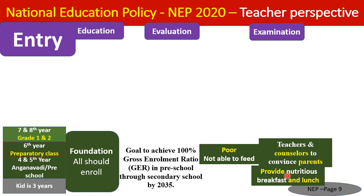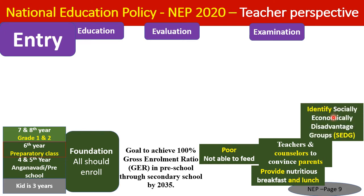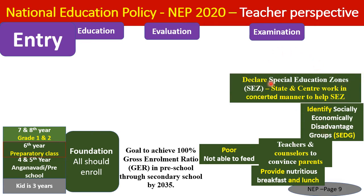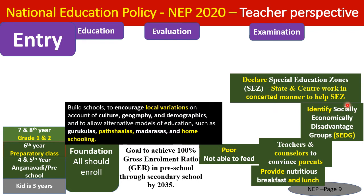For socio-economically disadvantaged groups unable to send children to school due to social problems, if such groups are concentrated in a region, that area can be declared a Special Education Zone (SEZ). Both central and state governments must work together concertedly to resolve the problem and ensure all children of that age group are in school.